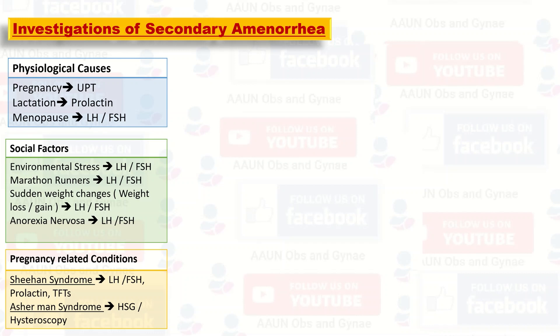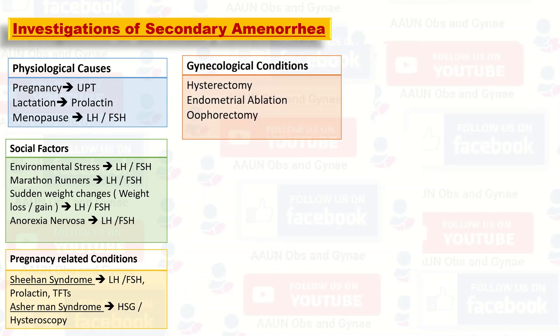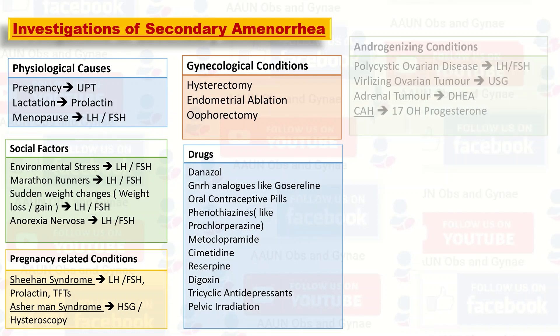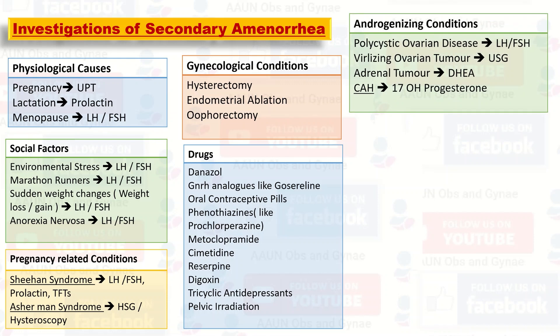In Asherman's syndrome, HSG and hysteroscopy are done. In gynecological conditions like hysterectomy, endometrial ablation, oophorectomy, and also drug-related secondary amenorrhea, these conditions are usually clinically based. Among the endocrine conditions, polycystic ovarian disease is diagnosed by checking the LH/FSH ratio; virilizing ovarian tumor and adrenal tumor by pelvic and abdominal ultrasound; congenital adrenal hyperplasia by 17-hydroxyprogesterone; and in adrenal tumor, DHEA levels are checked as well.